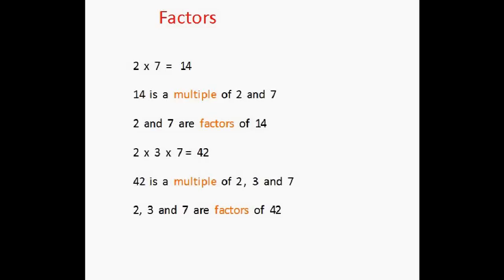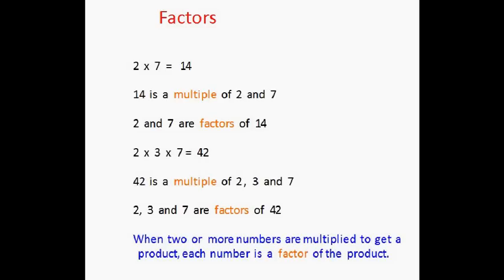Let's take another example, 42. Now 42 can be written as 2 multiplied by 3 multiplied by 7. So 42 is a multiple of 2, 3 and 7, and we can also say that 2, 3 and 7 are factors of 42.